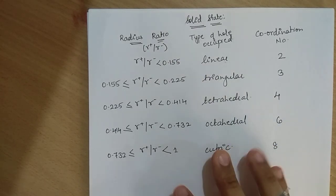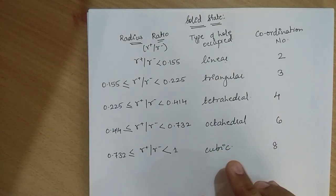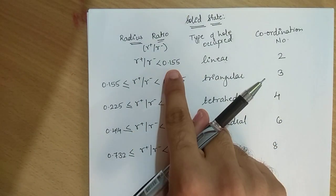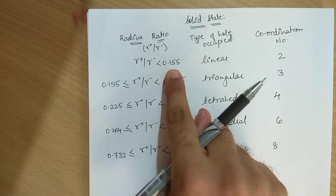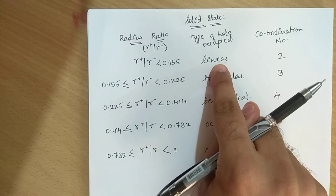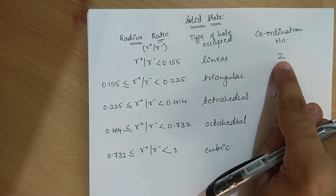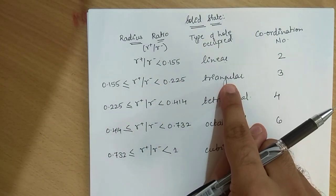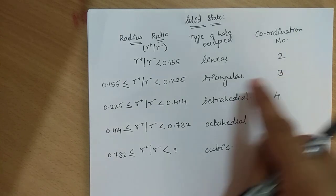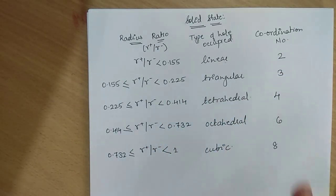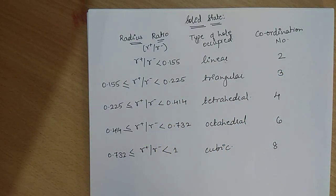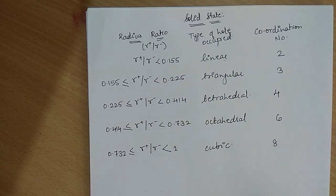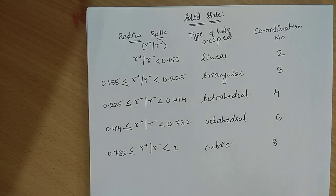If the radius ratio is less than 0.155, the type of hole occupied would be a linear hole with coordination number 2. If the radius ratio is between those two numbers, a triangular hole is occupied with coordination number 3. Please note down and remember this table — it is important.